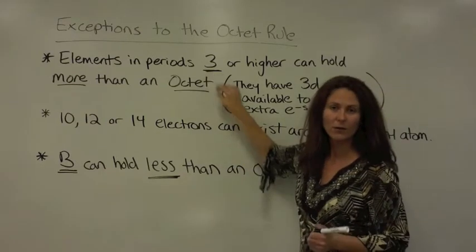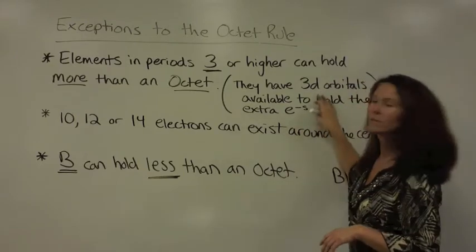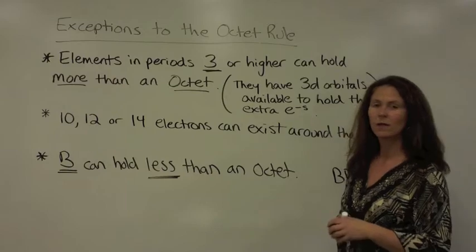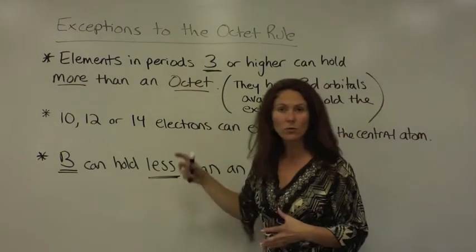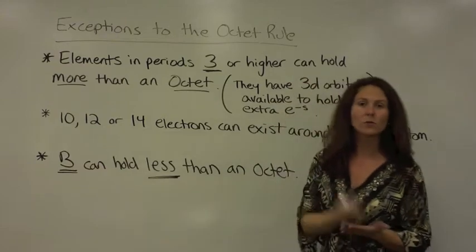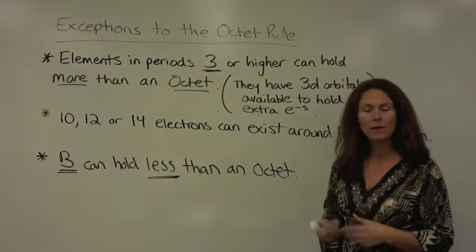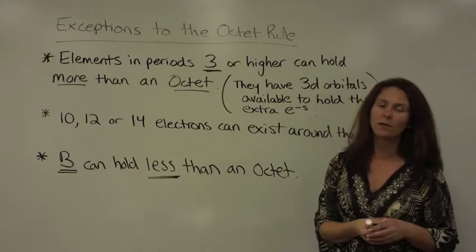Elements in period three or higher can actually hold more than an octet because they have those 3d orbitals available to hold all these extra electrons. Elements in period two only have a 2s and a 2p to fill, whereas elements in period three have a 3s, a 3p, and 3d to actually have electrons enter.